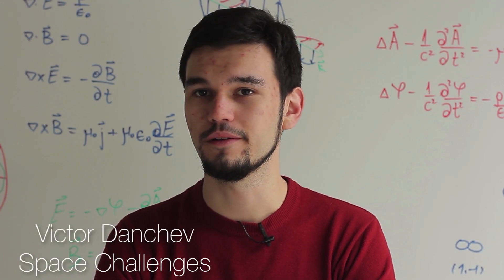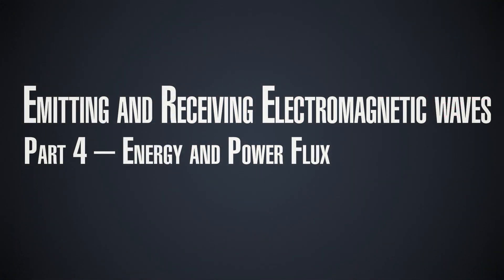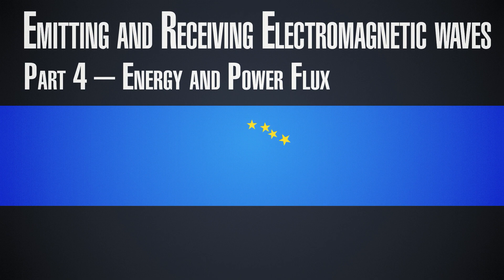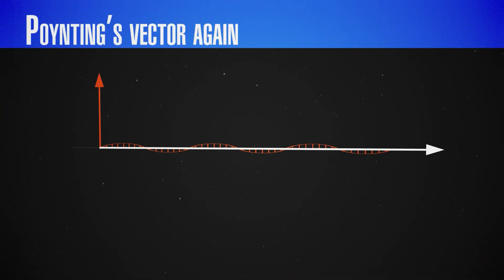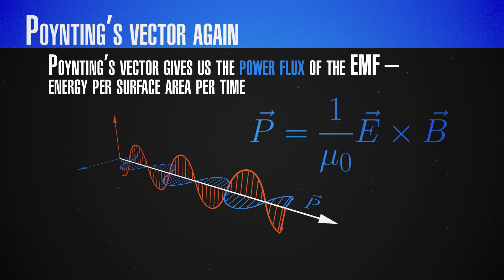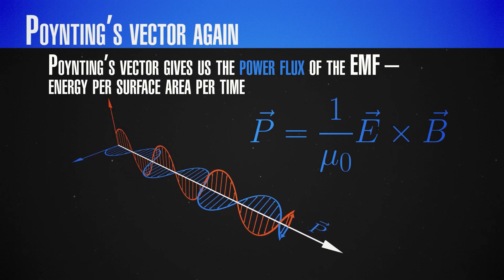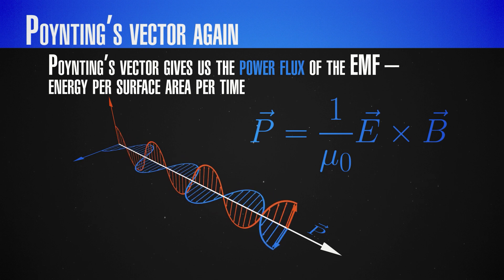There is one more very important topic which we need to look at, or revisit, and this is the energy and the power flux of electromagnetic radiation. We saw earlier, when we looked at the plane wave solution, we actually computed the Poynting vector. The Poynting vector gives us the power flux, or how much energy per unit time per unit area flows through a surface.